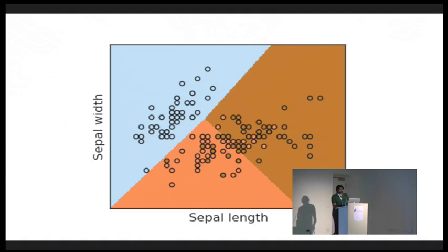Many real world problems do not separate out so nicely into linear decision boundaries. One way to deal with this is to introduce nonlinear features, like the square of the sepal length or the square of the width. With these quadratic features, you end up with curved decision boundaries.